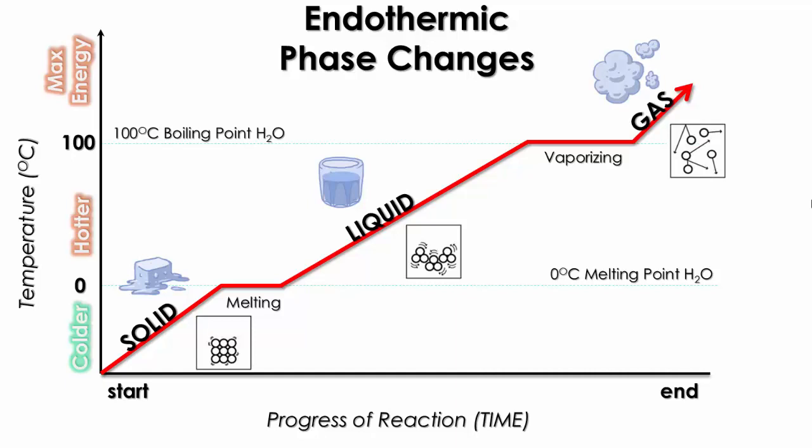Now, as you've noticed, the line segments where the name solid, liquid, and gas, those are the only points on this graph where the temperature is increasing. During the melting and vaporizing phase change, there is no change in temperature.